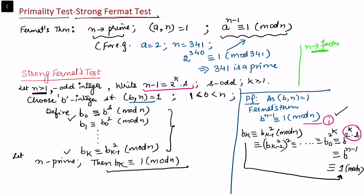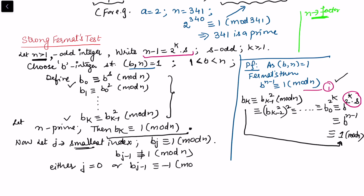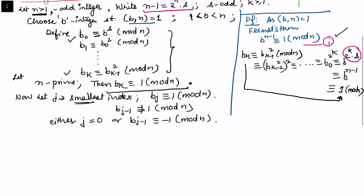Let j be the smallest index such that bⱼ ≡ 1 mod n. Since j is the smallest such index, bⱼ₋₁ is not congruent to 1 mod n, and in fact all previous terms are not congruent to 1. Now there are two situations: either j equals 0, or bⱼ₋₁ ≡ -1 mod n.